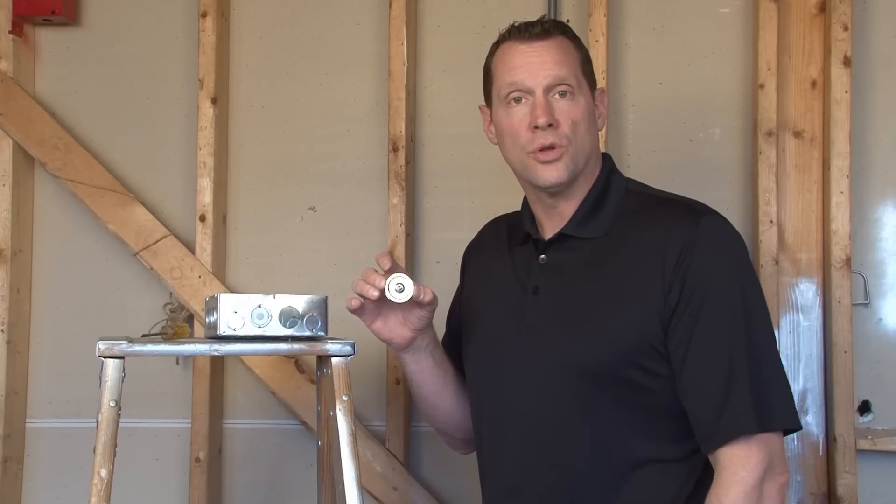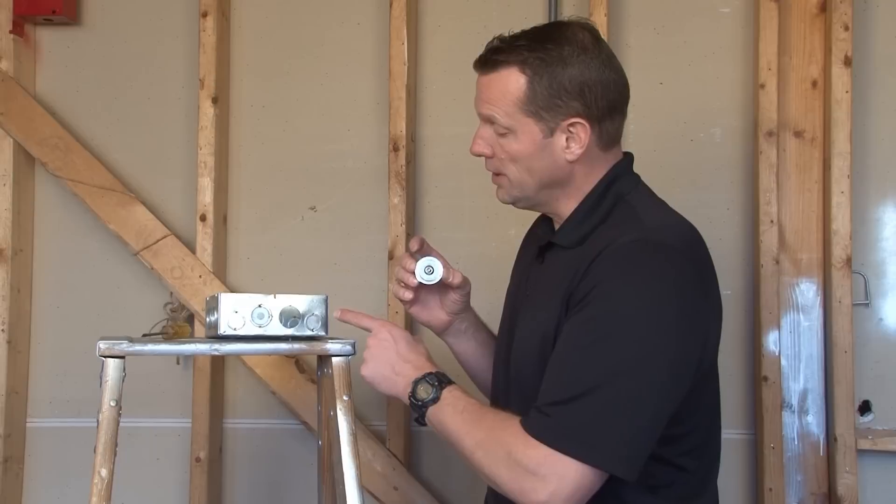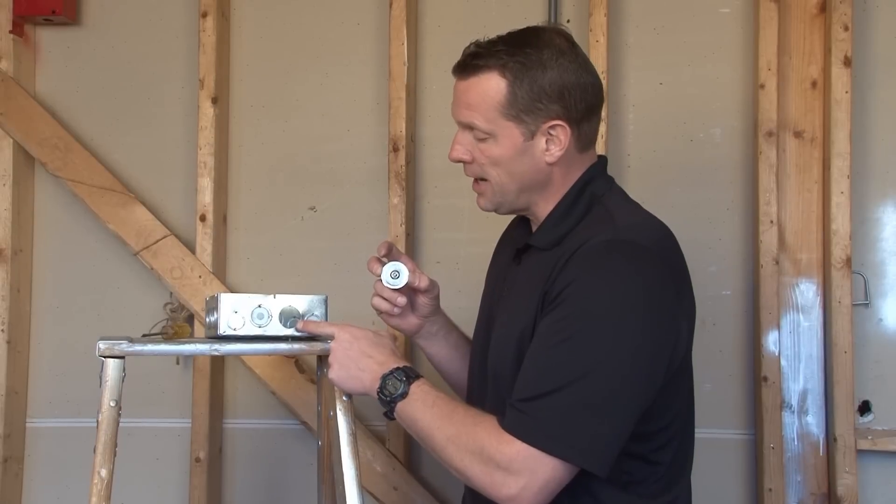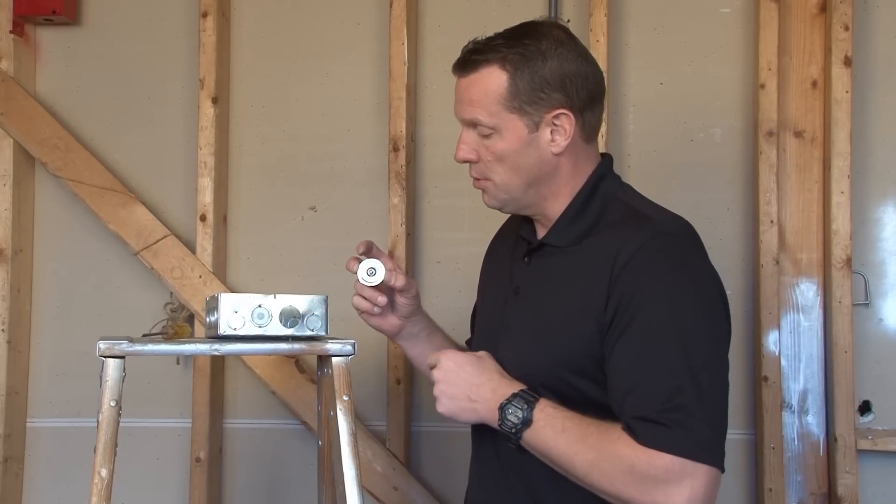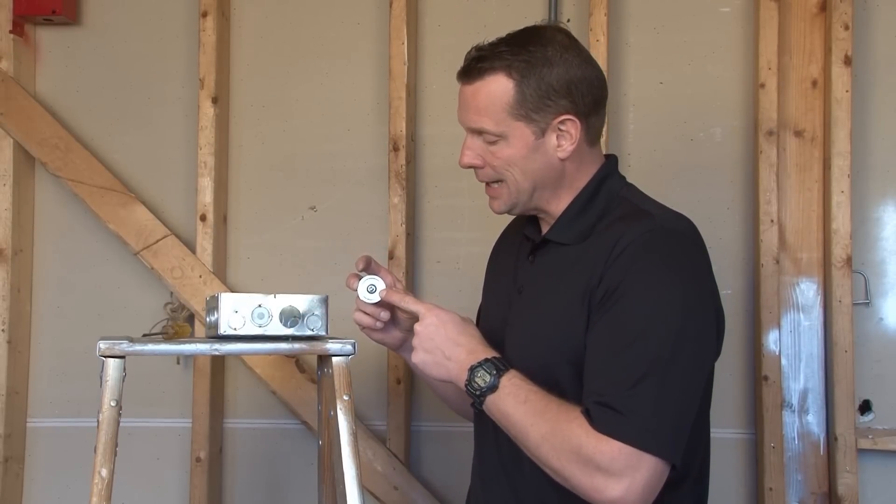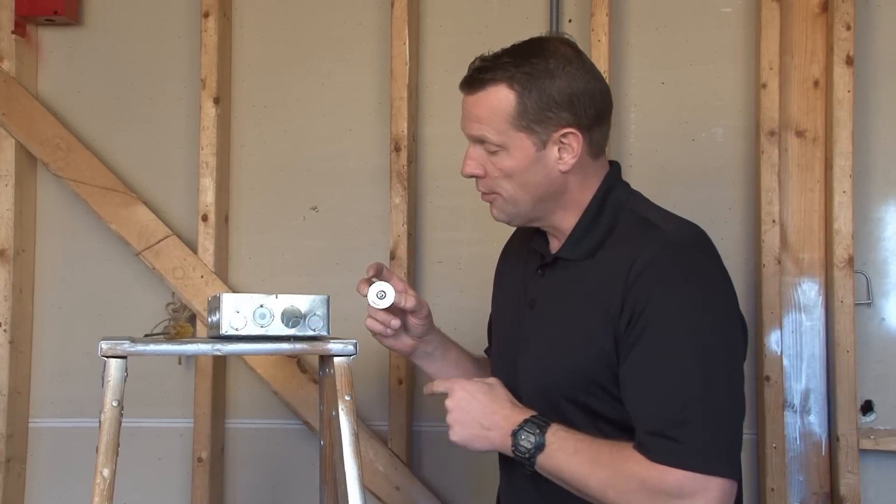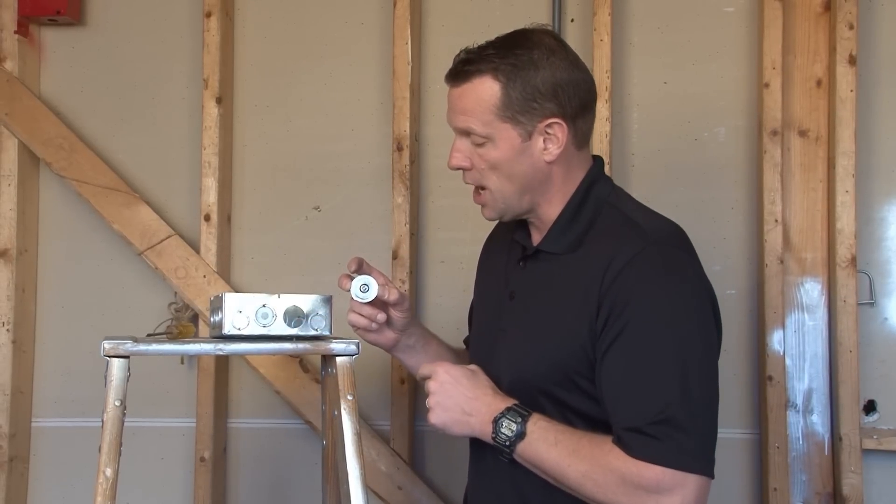Many times when installing electrical conduit, an installer will leave an open knockout by mistake. This is a violation of the National Electrical Code and requires a knockout seal to be installed in the open hole, preventing risk of electrical shock.